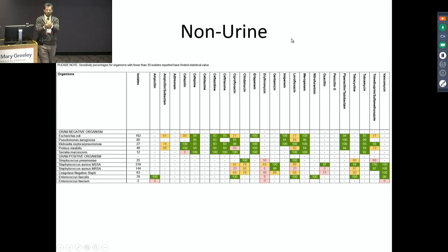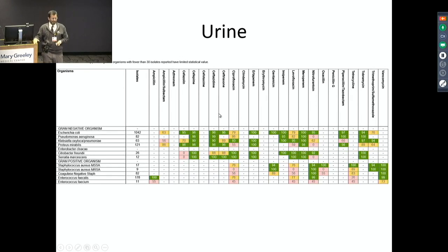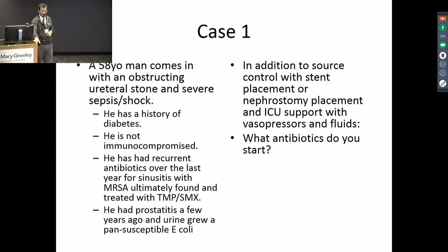At Mary Greeley we keep track of something called an antibiogram — a production of the lab that tells us what our bacteria are sensitive to. For example, even though E. coli is sensitive to ampicillin in theory, at our particular facility it's only 60% active, so maybe that's not a good drug until you get your sensitivities back. Likewise, levofloxacin against E. coli is only 75% effective at our facility. We do the same thing in the urine and see increased resistance there because bacteria like to live in the urine.